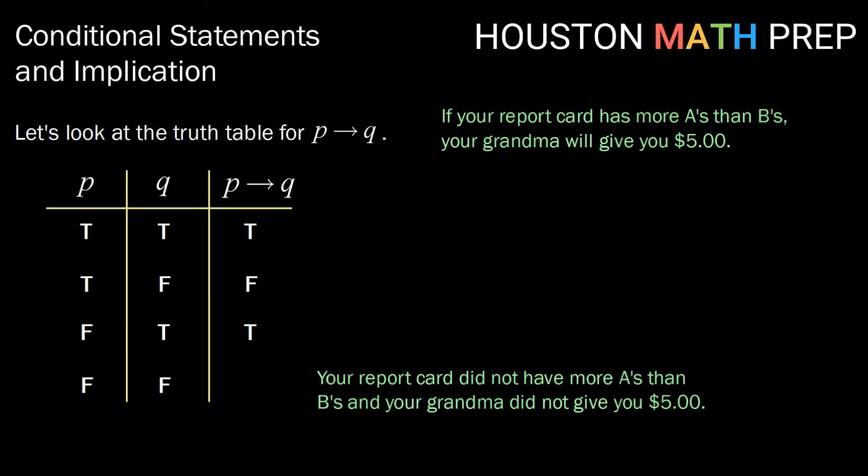And finally, false, false: your report card did not have more A's than B's, and your grandma did not give you $5. Here, grandma did not break her promise — she kept her promise. So we get, again, a true truth value.